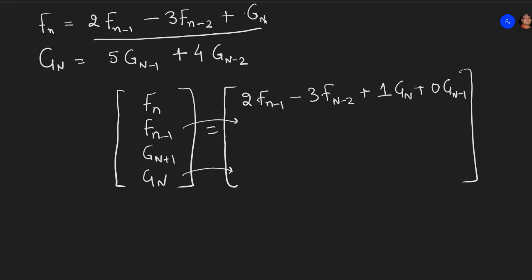Second term as I said will go as it is. So I can just put 1 times F of n minus 1 plus 0 times F of n minus 2 plus 0 times G of n plus 0 times G of n minus 1.